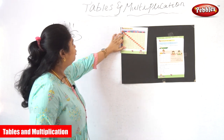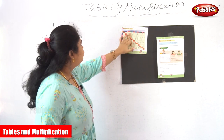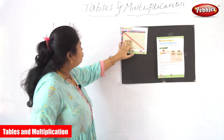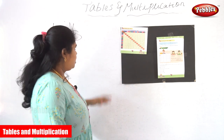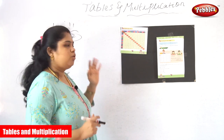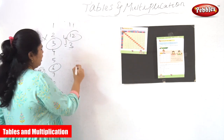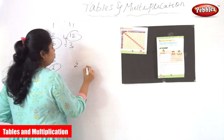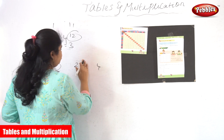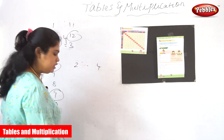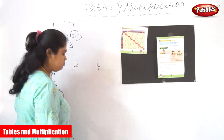So 0 into 4 is 0, 1 into 4 is 4, 2 into 4 is 8. So now we have studied — we have taken 2 to 4 tables. We have completed 2, 3, 4 tables.